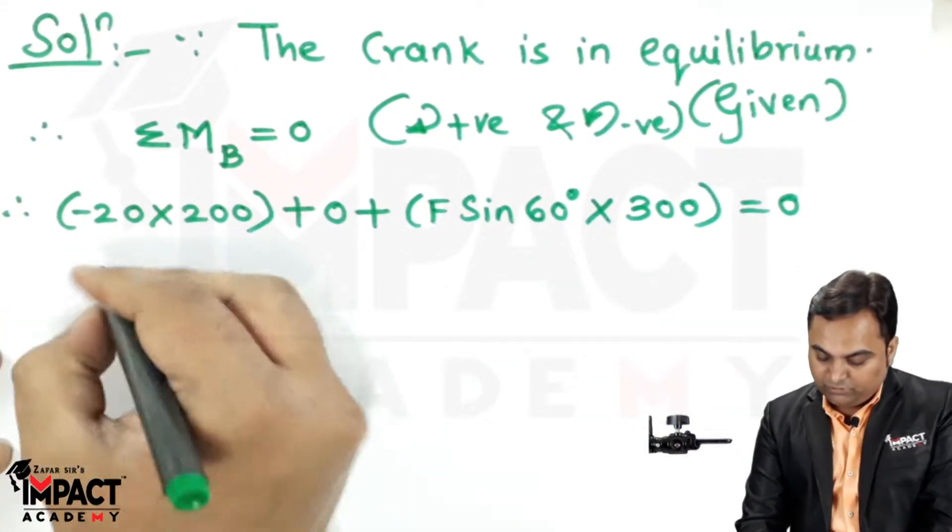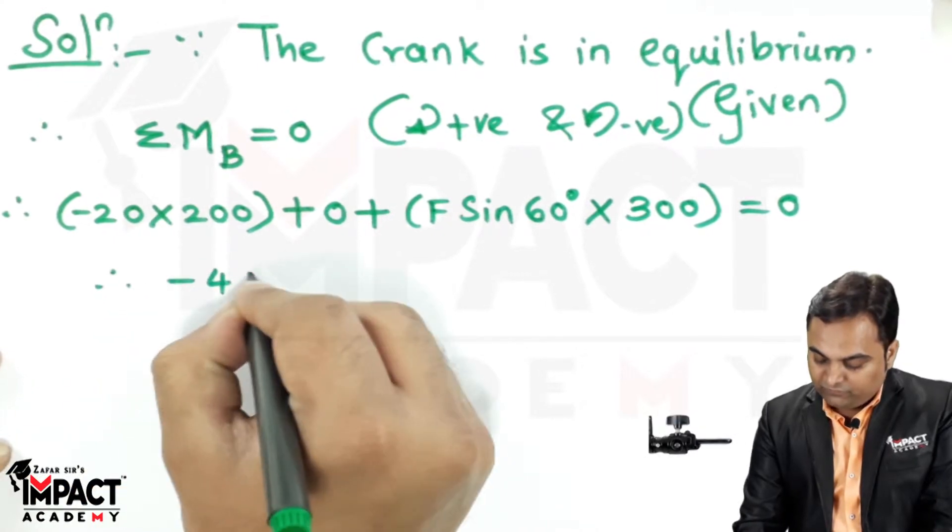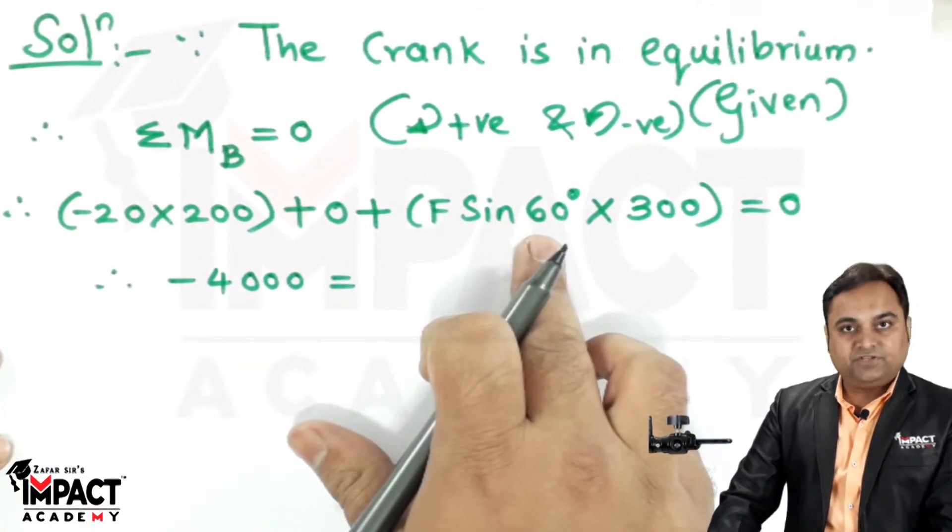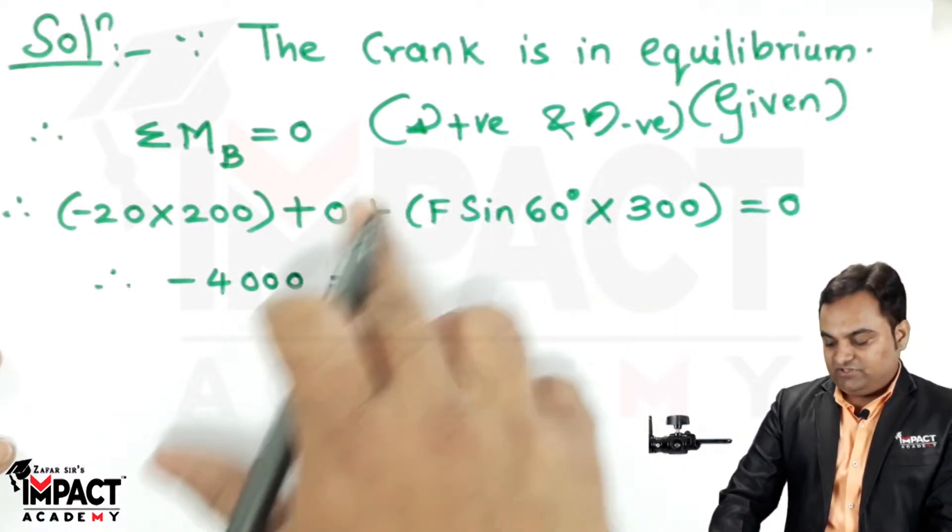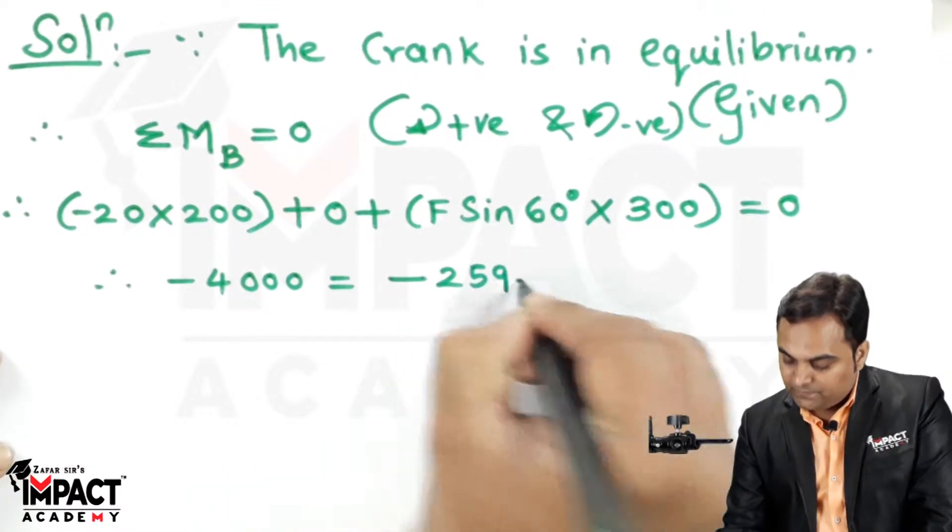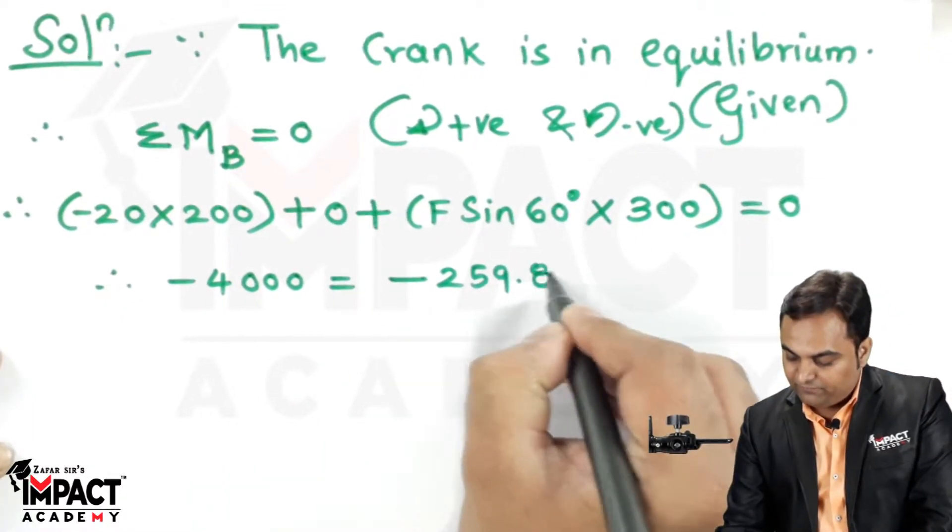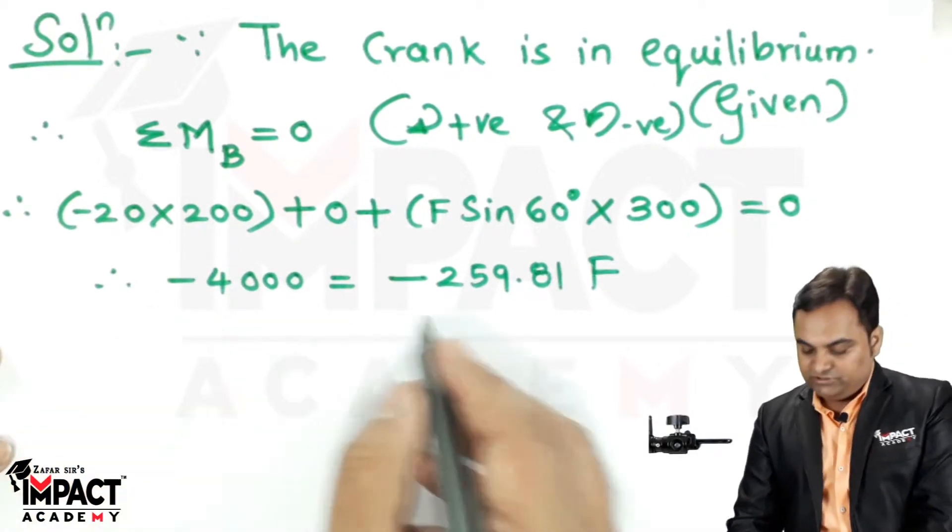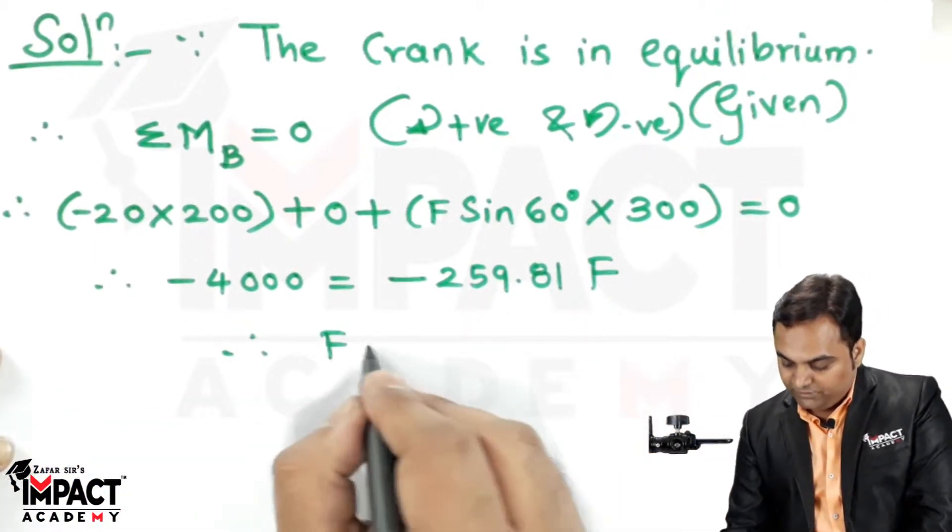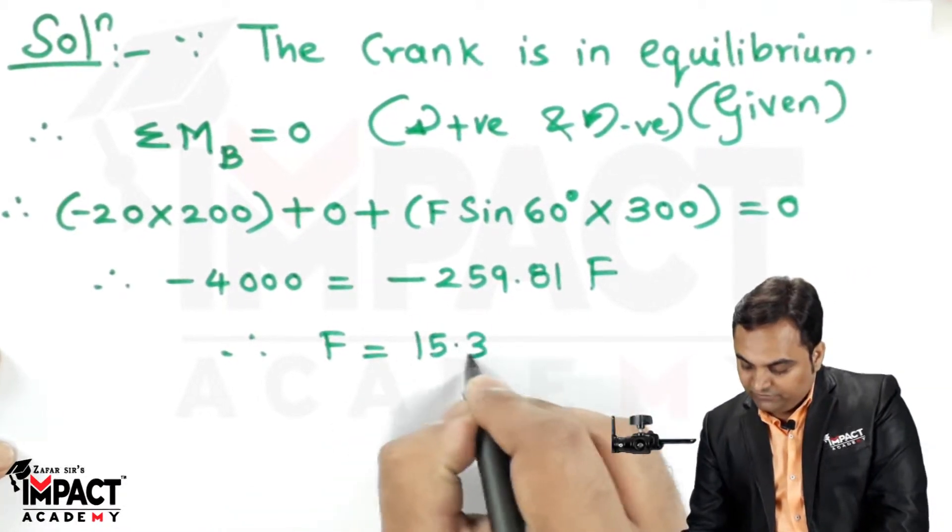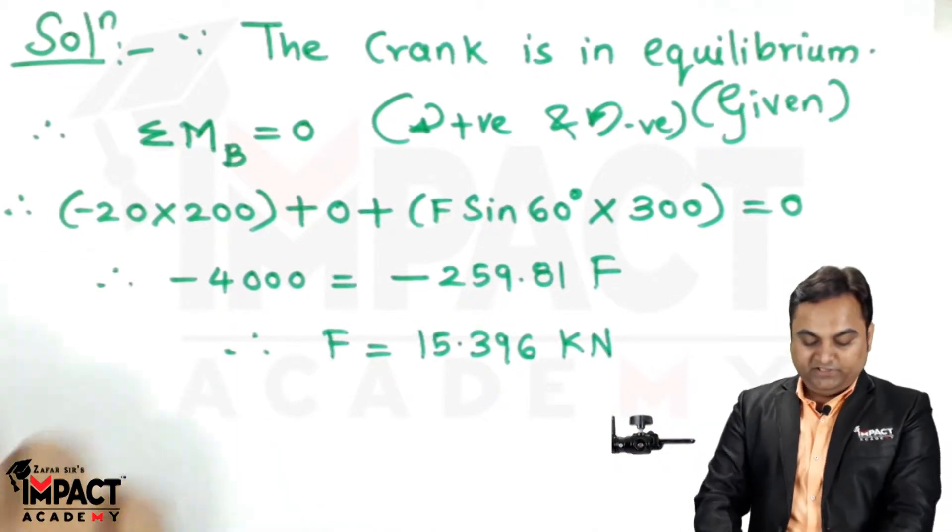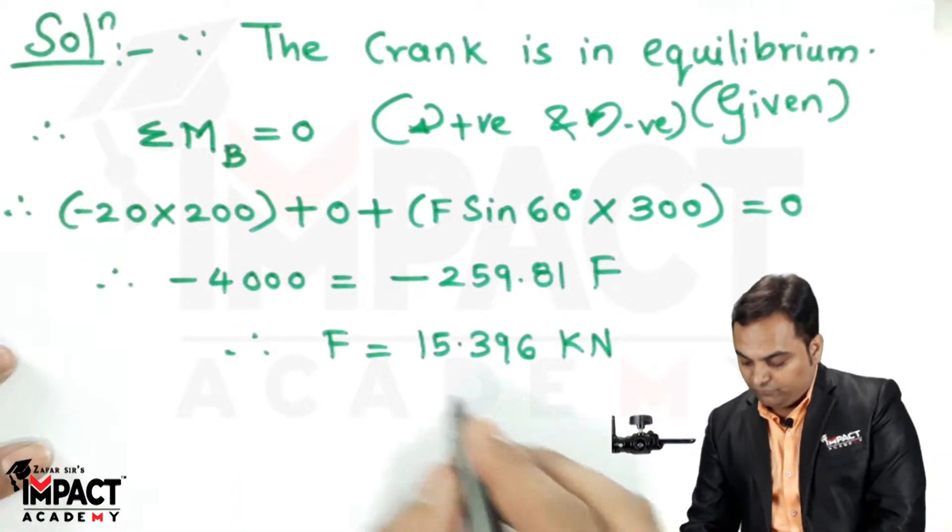This value comes out to be minus 4000, and sin 60 into 300 multiplied by F, when shifted to the other side, the value is minus 259.81F. Negative gets cancelled from both sides, and F would be 4000 divided by 259.81. So the final value is 15.396 kilonewton.